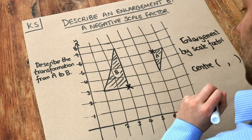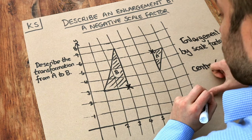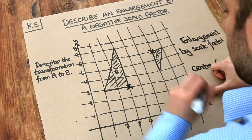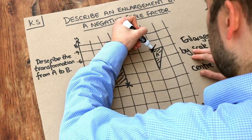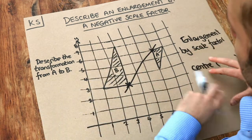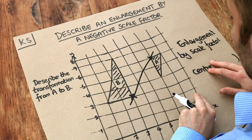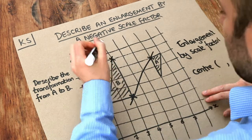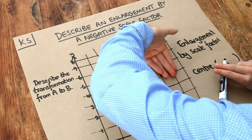Then we always draw a line that goes through those two points. So I'm going to draw a line like this. You would usually be using a ruler. And let's do the same for another two points. If we look at this point here, you can see that the shape is flipped upside down. So this is the pointy bit on shape B.